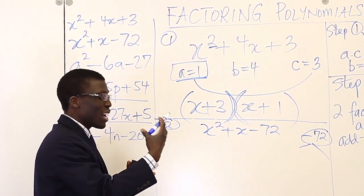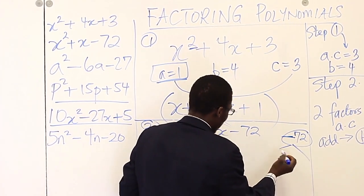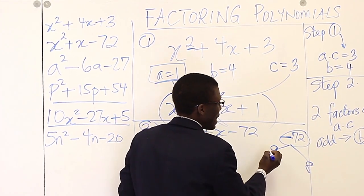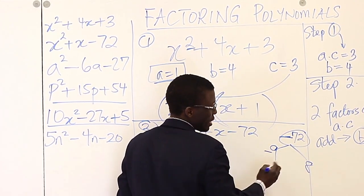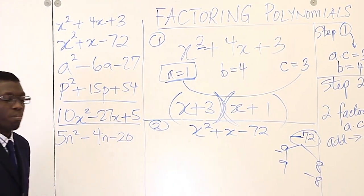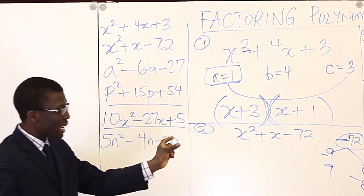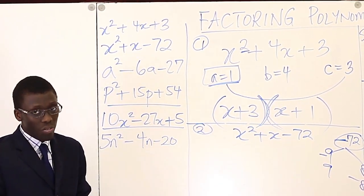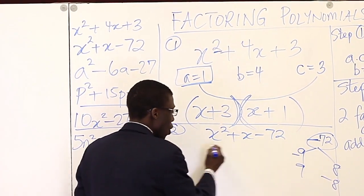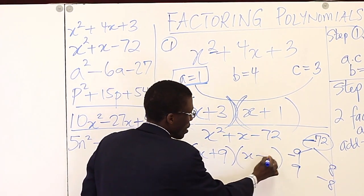So we're looking for two things that multiply to give negative 72 and add to give positive 1. And so, again, it's good to have a good understanding of numbers. If you understand that, you know that 9, 9 times 8 is 72. Negative 9 times 8 is negative 72. And 9 times negative 8 is also negative 72. But if we add, what is negative 9 plus 8? Well, that's negative 1. What is 9 plus negative 8? That's 1. So you know that you will just have x plus 9, x minus 8.